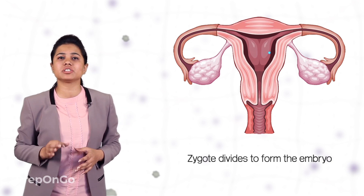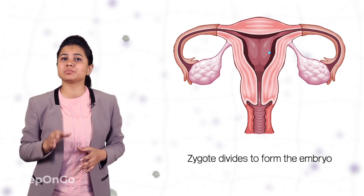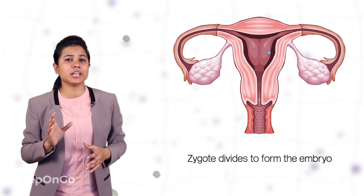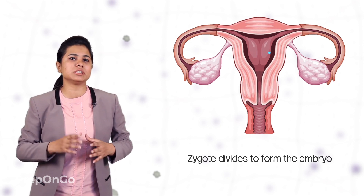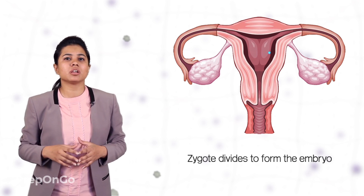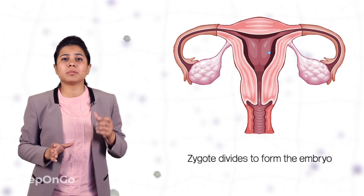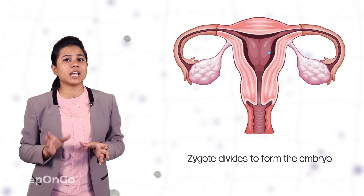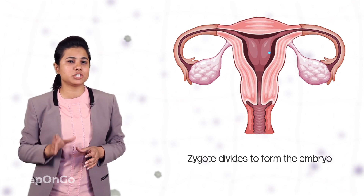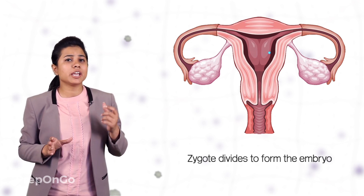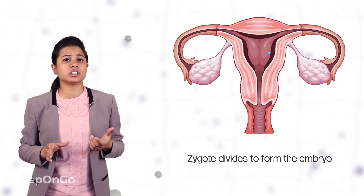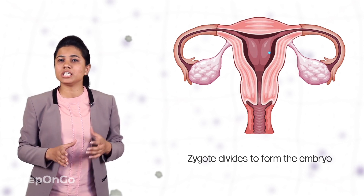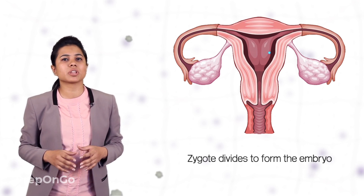Before implantation, the uterus must be already prepared so that it can develop the embryo inside it. The interesting thing is that the mother's body is already designed to undertake the development of a child and hence the uterus prepares itself every month to receive and nurture the growing embryo.